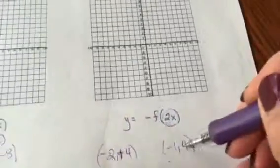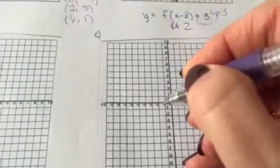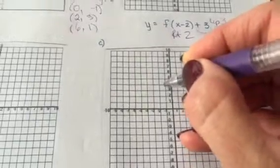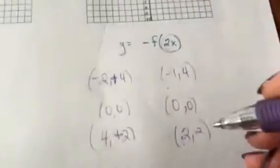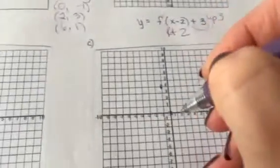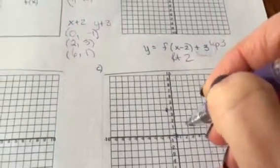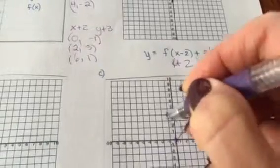Let's plot our new points. Negative 1, 4. There it is. And 0, 0. That guy is kind of boring, he just always stays the same it seems like. And 2, 2. And there it is.